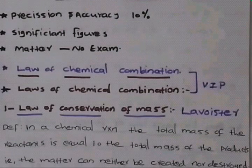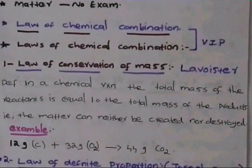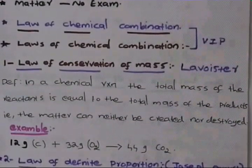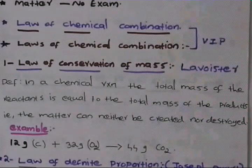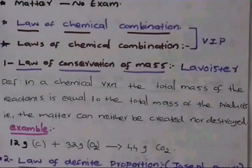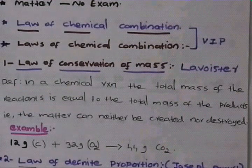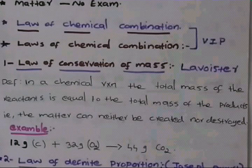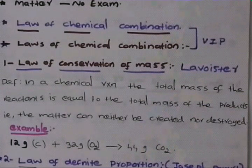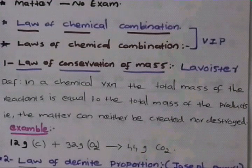The definitions are very easy. First, the law of conservation of mass. In a chemical reaction, the total mass of the reactant is equal to the total mass of the product.